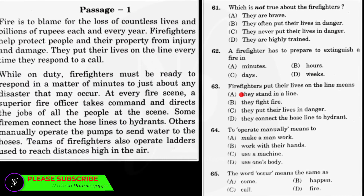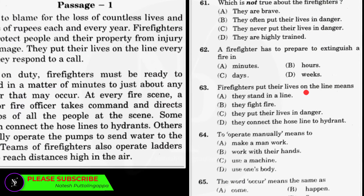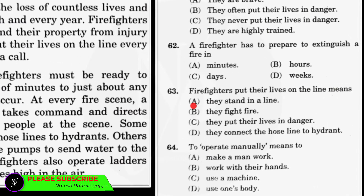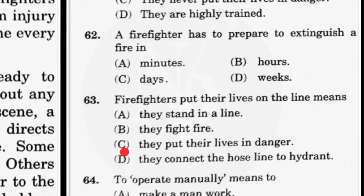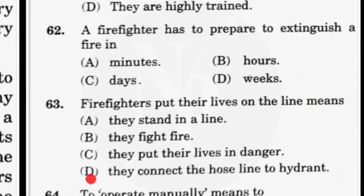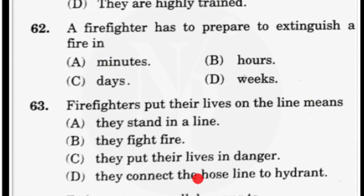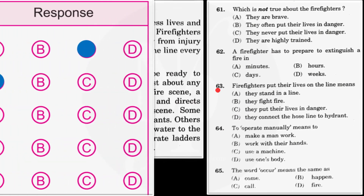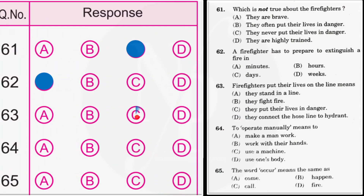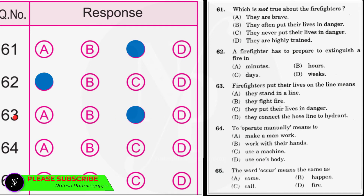Question number 63: 'Firefighters put their lives on the line' means? Answer option A: they stand in a line. B: they fight fire. C: they put their lives in danger. D: they connect the hose line to hydrant. 'Put their lives on the line' means they put their lives in danger. So answer option C is the correct answer for question number 63, and we mark C on the OMR answer sheet.